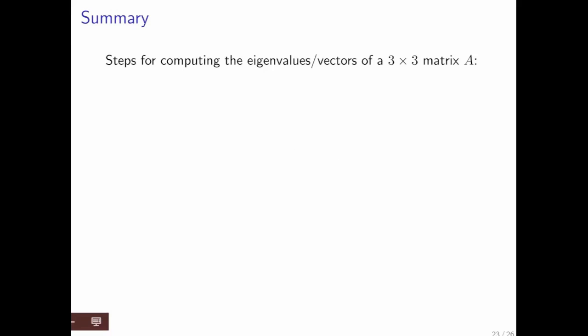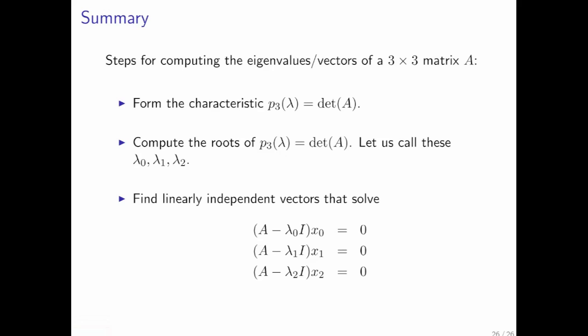So in summary, in order to compute the eigenvalues and eigenvectors of a 3 by 3 matrix, what you do is you form the characteristic polynomial, you find the roots. There are typically three, although they may not all be distinct. And then you find vectors in the null space of the matrix when you subtract 1 by 1 of the eigenvalues from the diagonal.